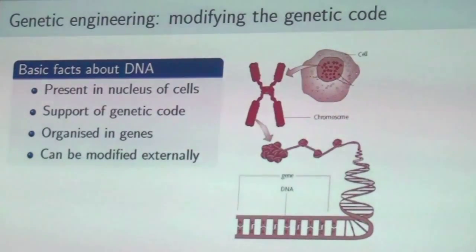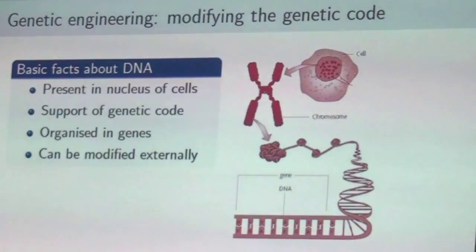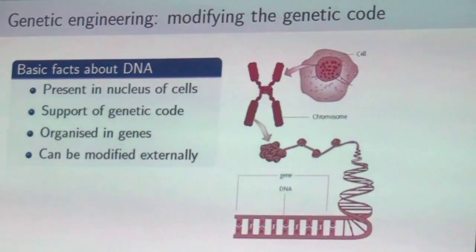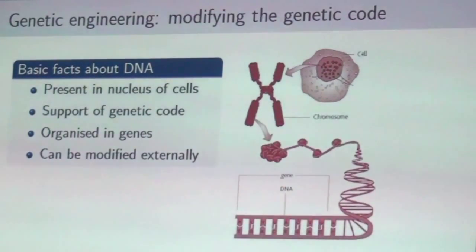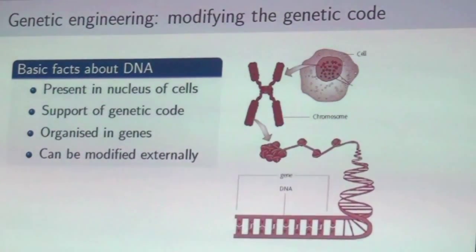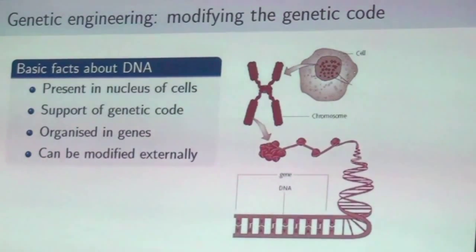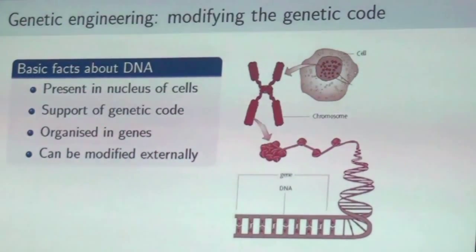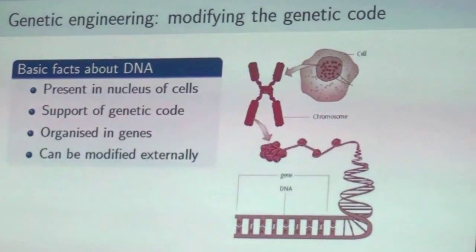The second important technique is genetic engineering — you tinker with the genetic code to obtain what you want. The basis of genetic engineering is to modify DNA, a molecule present in the nucleus of almost every cell, that is required to build an organism and can be modified externally.